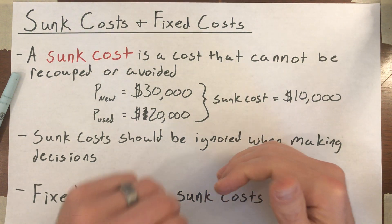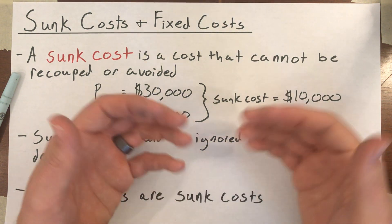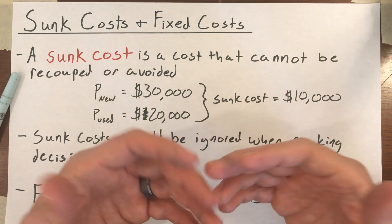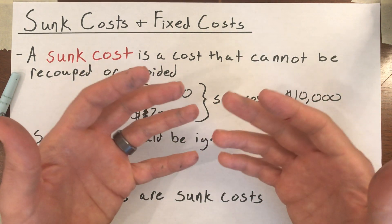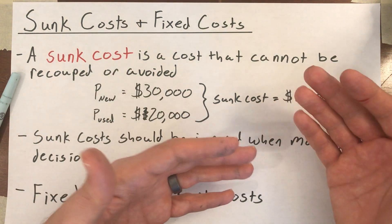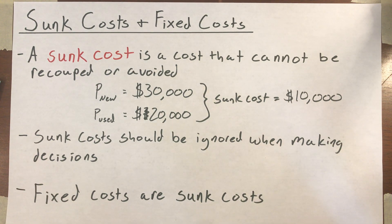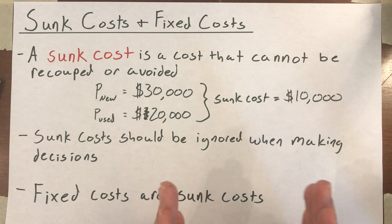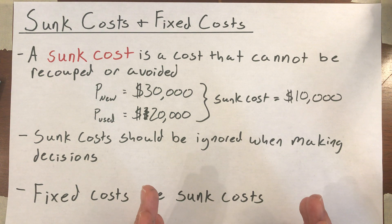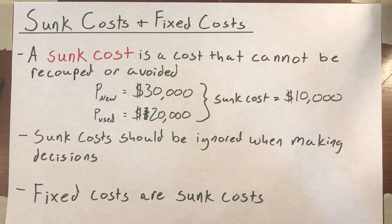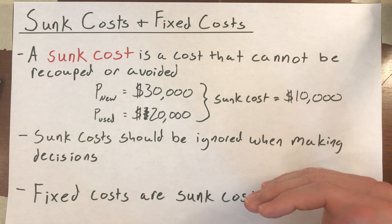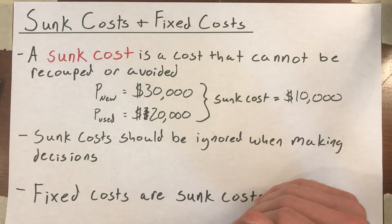Similar things happen when countries go to war. If the war is not going particularly well and you've spent a lot of money and lost a lot of people, you've probably heard the phrase, 'We can't let our soldiers have died in vain' — the idea being that winning the war will redeem the lives that were lost. An economist would tell you: the number of people who've already died is a sunk cost. They're not coming back whether you win the war or not. The question is, going forward, do you expect the extra cost in lives and treasure to be worth whatever you get out of the outcome of the war?